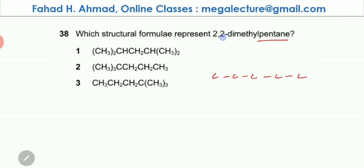The other thing is this 2,2-dimethyl — this indicates that there are 2 methyl groups, both on carbon position number 2. Methyl is one carbon atom, so this is methyl. Dimethyl means there's another methyl group. So this is 2,2-dimethyl, and we can add in all the hydrogens.